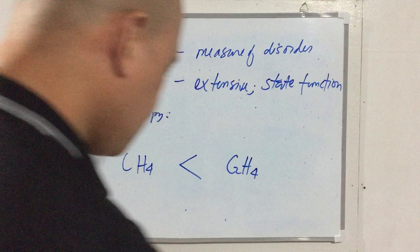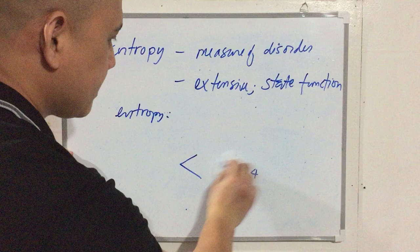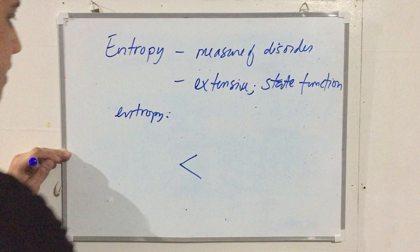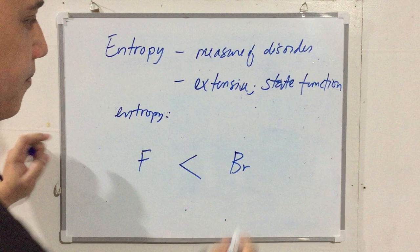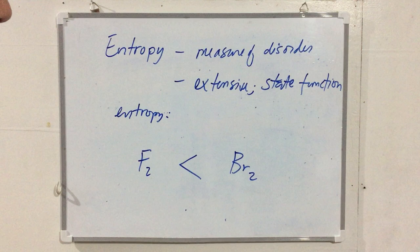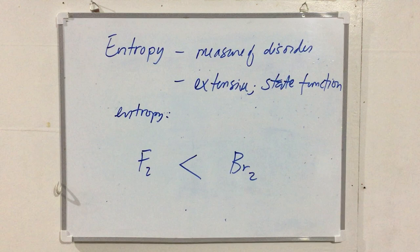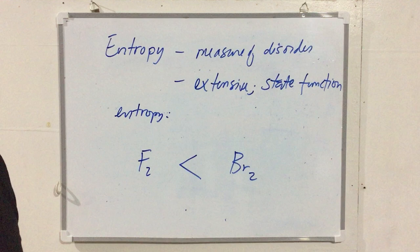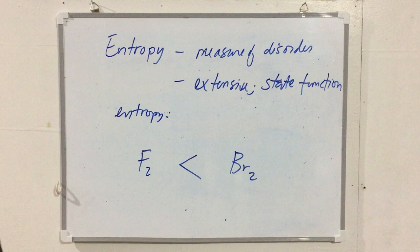Even comparing elements: chlorine (Cl₂ or F₂) would have smaller entropy than bromine (Br₂) simply due to molar mass. Entropy is extensive, so more of something means higher entropy. In state changes, entropy increases as particle mobility increases — solids have least mobility, then liquids, then gases.